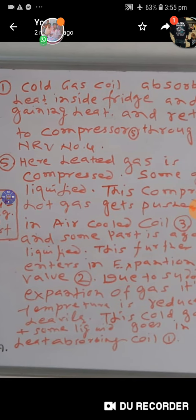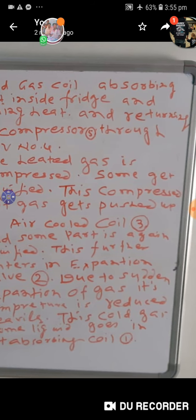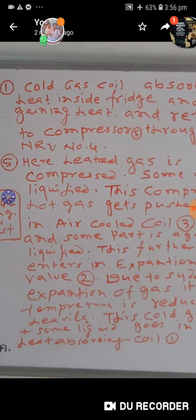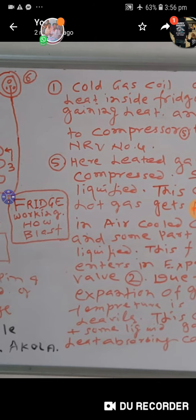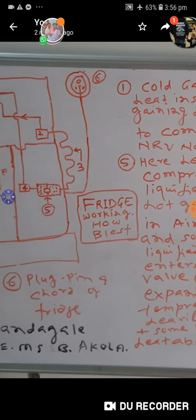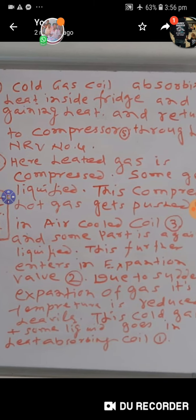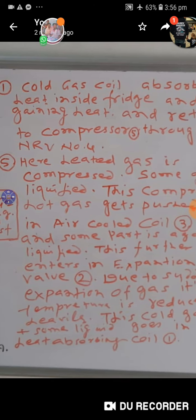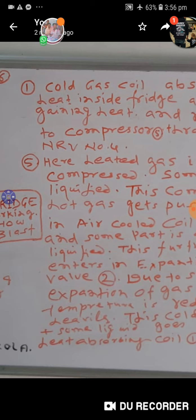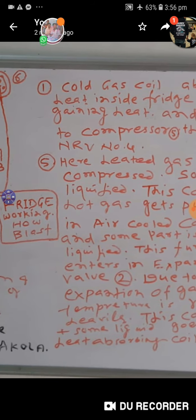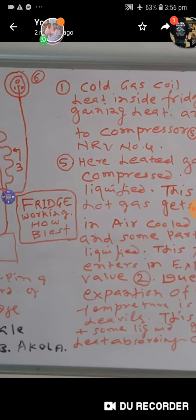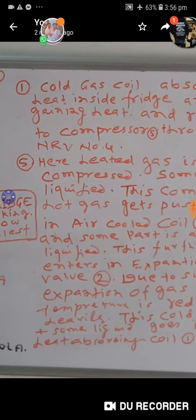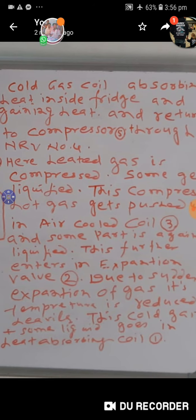Again I will explain this one by one. This is called cold gas coil absorbing heat inside fridge and gaining heat and returning to compressor 5 through NRV number 4. This 5 number is a compressor unit placed in gas box. Here heated gas is compressed. Some gets liquefied. This compressed hot gas gets pushed up in air cooled coil number 3 and some part is again liquefied.